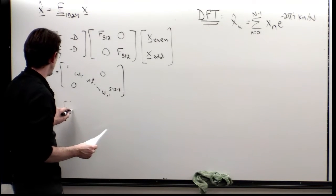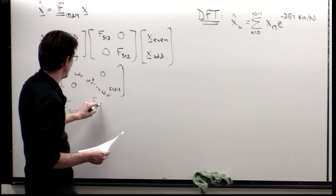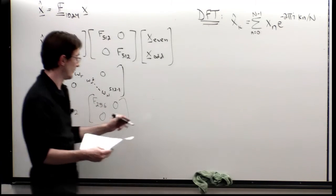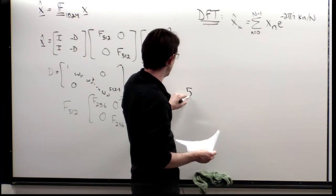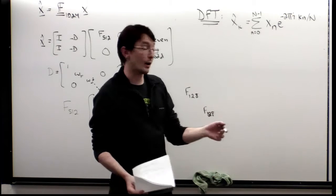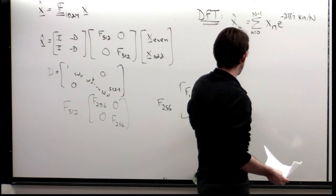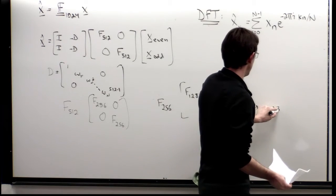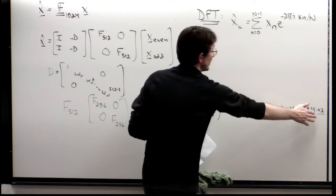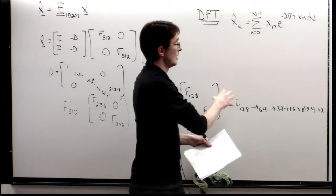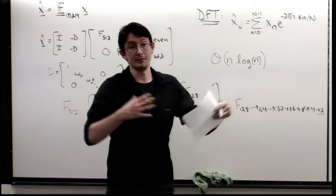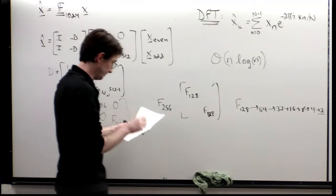Right off the bat, going from 1024 to 512 has saved us a factor of two in the expensive calculations. But the great thing is that F512 can be broken up into two copies of F256 now. Now we can cut that in half again. And F256 can be broken up into F128. And so now you can see why we want powers of two. Because we can keep doing this 128 to 64 to 32 to 16 to 8 to 4 to 2. You can go all the way down the line. And every time you do that, you make a factor of two savings in the computation. So that's how you get the order n log n speedup.